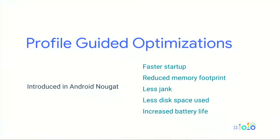Let me briefly remind you how Android uses profile-guided optimizations. This is an efficient technique introduced in Android Nougat as part of a hybrid execution model, where code being executed can be in three different optimization states at the same time. The primary goal is to improve all key metrics of application performance: faster startup time, reduced memory footprint, less jank during usage, less disk space used by compiler artifacts, and increased battery life because heavy optimizations are done when the device is not in use.